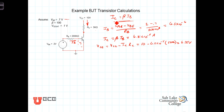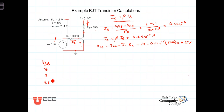Let's remind ourselves that I sub C equals beta times I sub B is only true if the transistor is in the active region. Now, what happens as we start to increase V_BB? Let's make a little table with V_BB, I sub B, I sub C, and V_CE. We'll let V_BB go to 3 volts, then to 4 volts, and then to 4.5 volts.